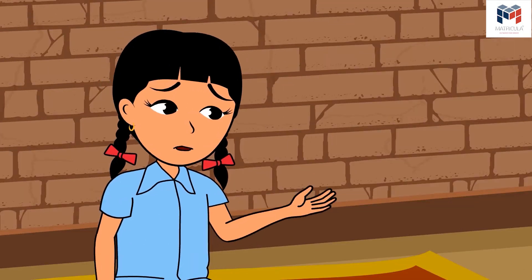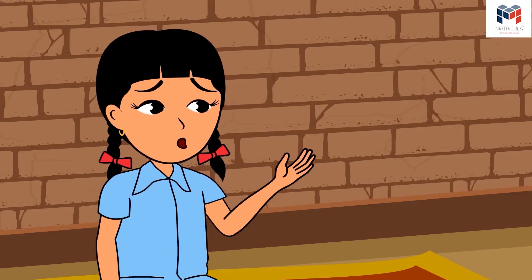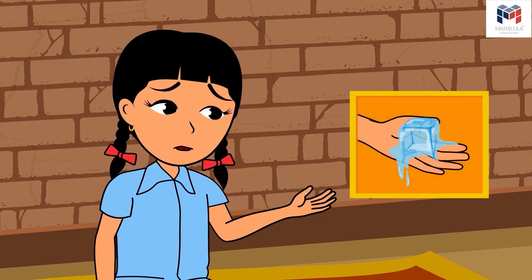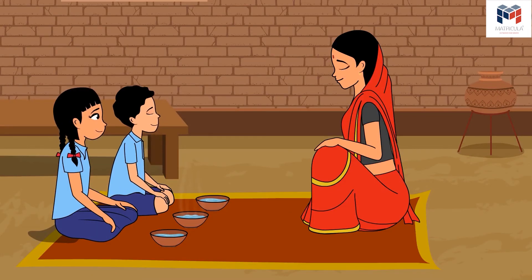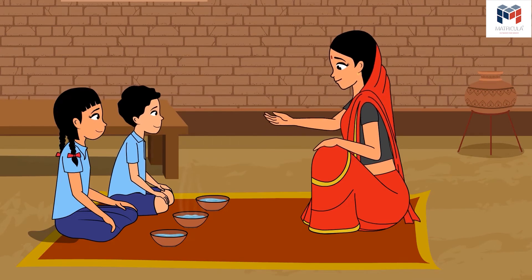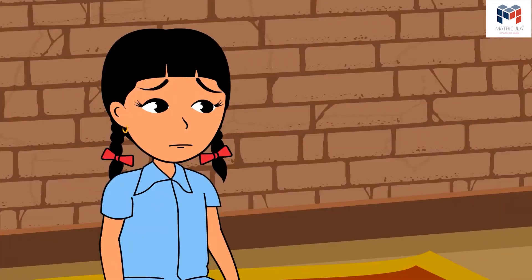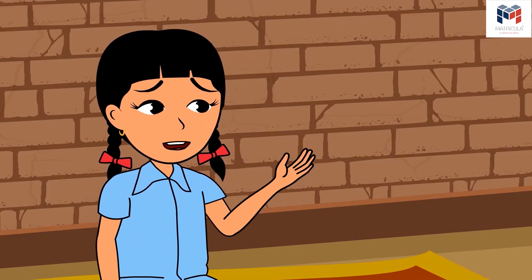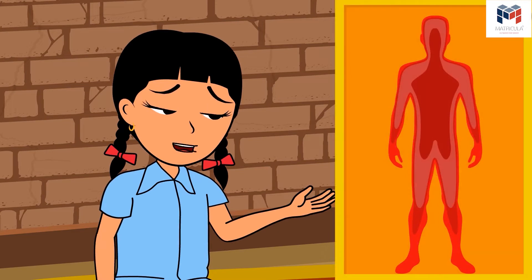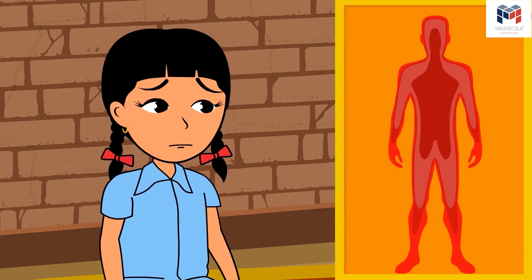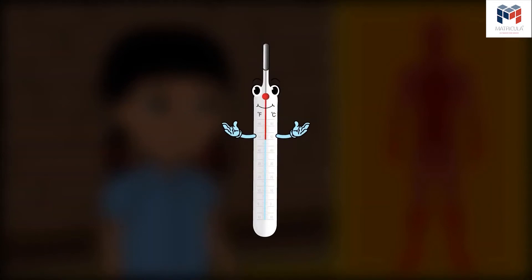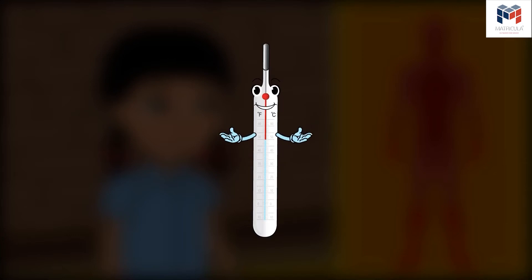Yes, like ice — ice is so cold that if we try to hold it in our hands, our hands become numb and the ice begins to melt. Why does it melt? Because the heat from the atmosphere or our body melts it. So to find out the intensity of hotness or coldness of a body, we cannot only rely on our sense of touch. The degree of hotness or coldness of a body can be found out by its temperature.